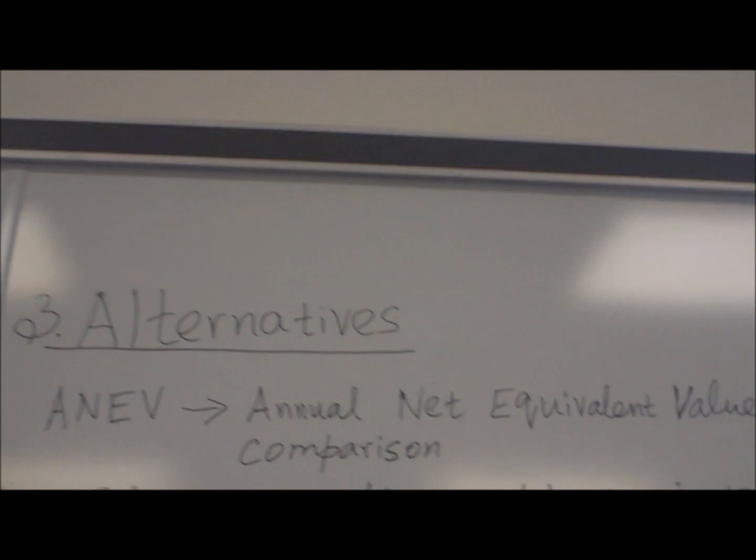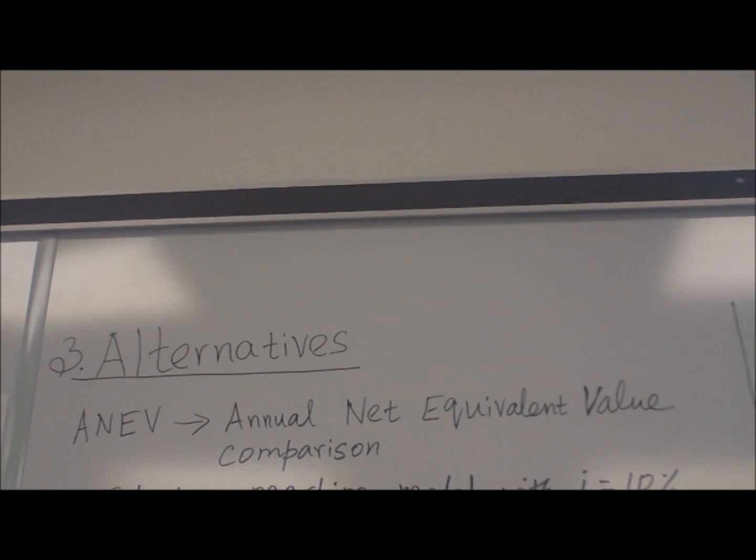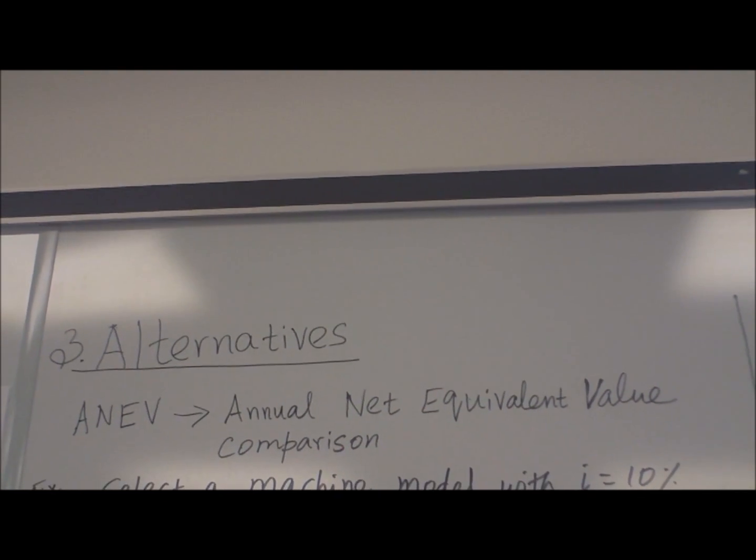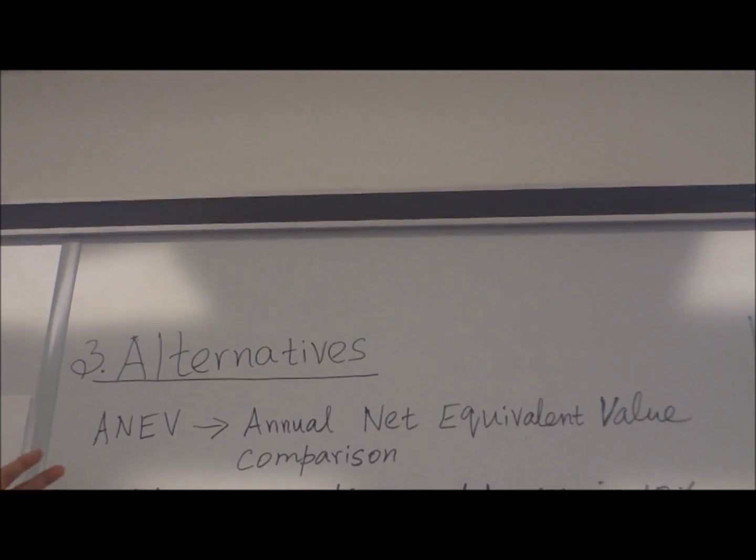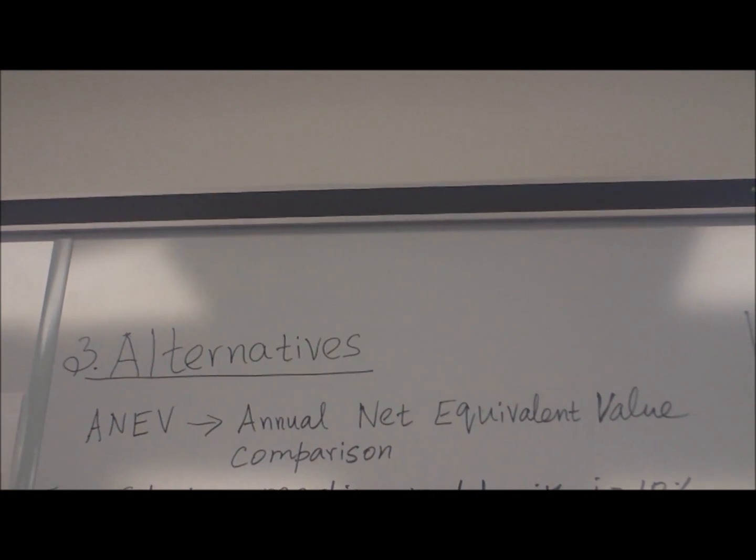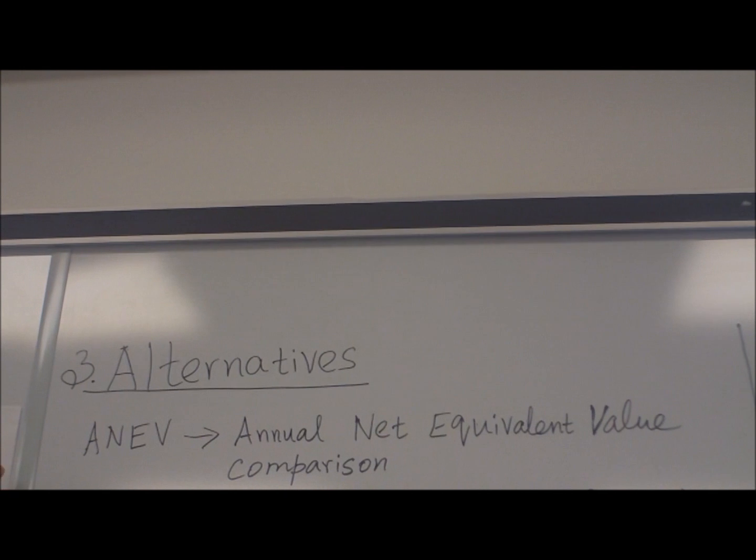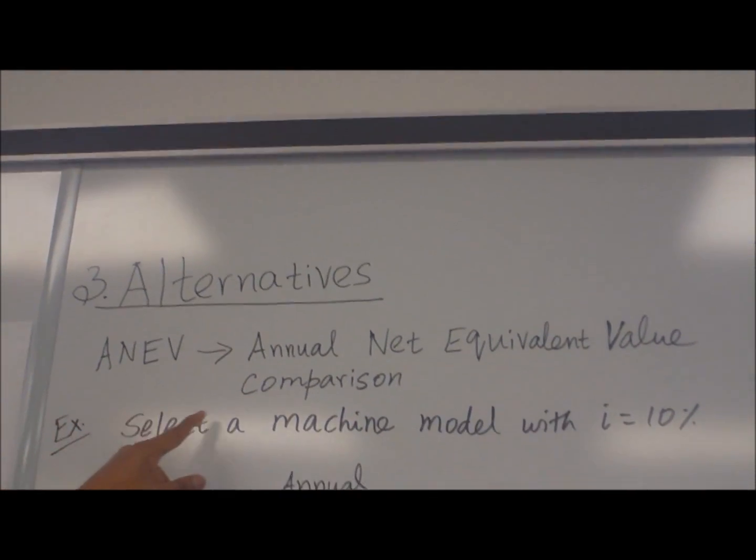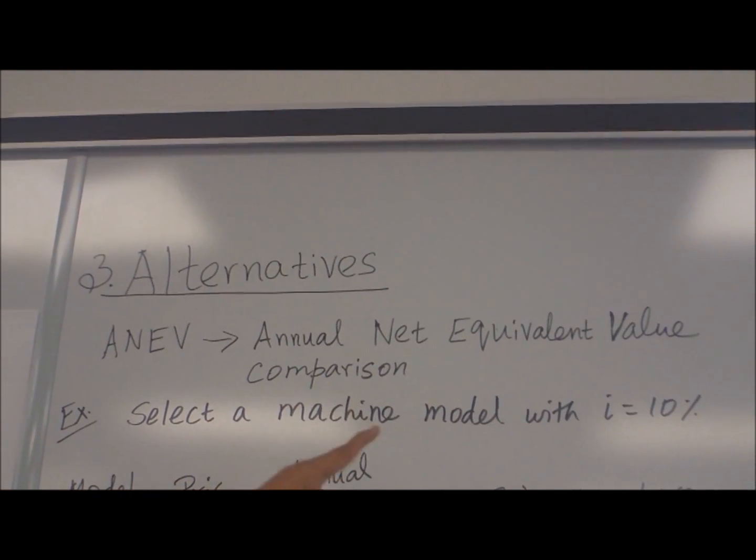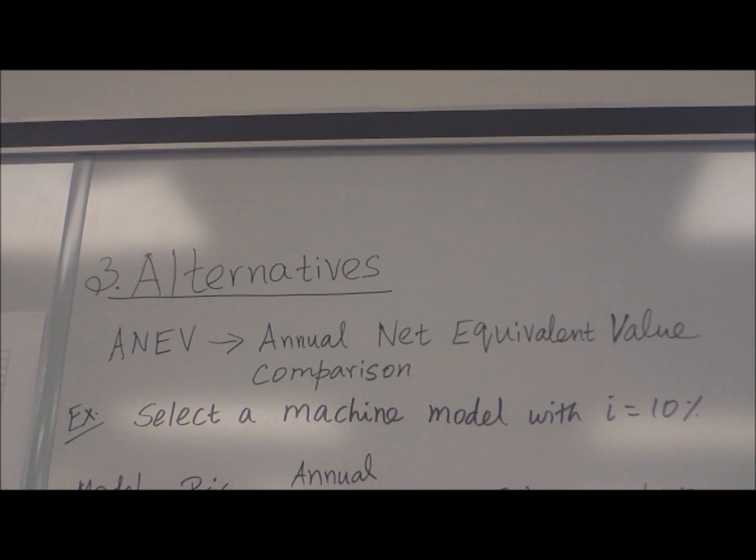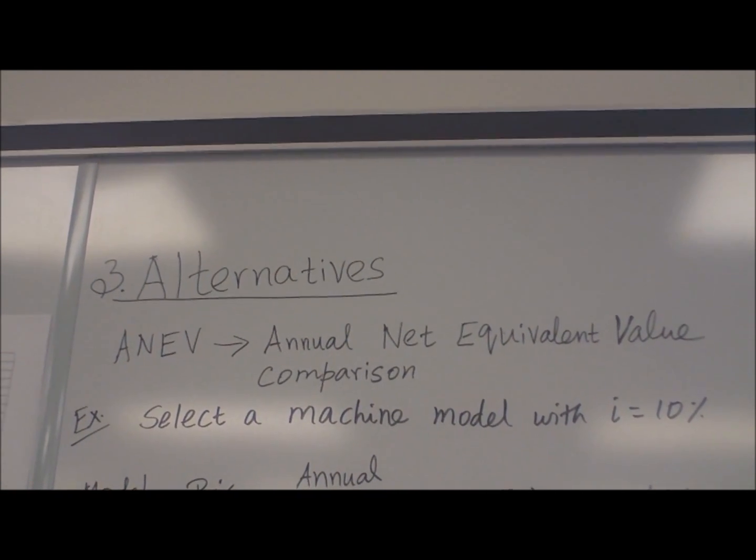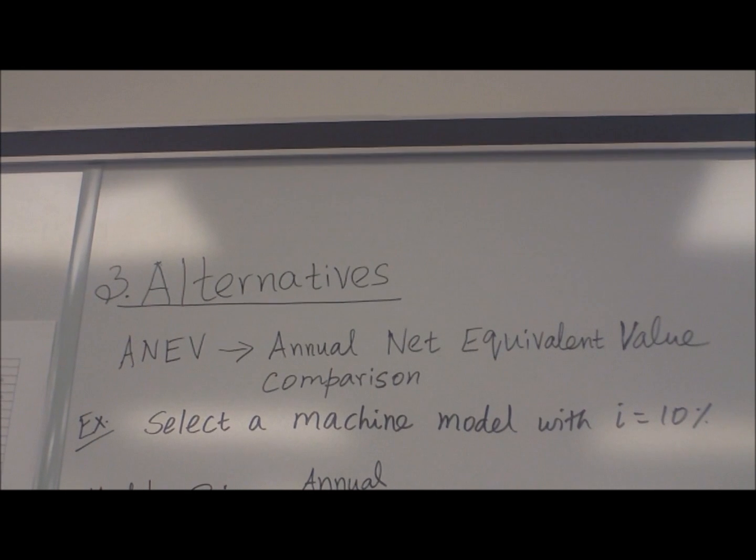Alternatives: What is alternatives? If you have more than one choice, how to choose the best one? We have different comparison methods to choose a better alternative. One is ANEV, which stands for Annual Net Equivalent Value comparison. That means whatever value is given, you have to convert them into equal annual A value.